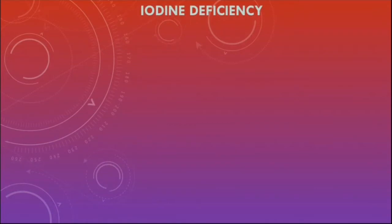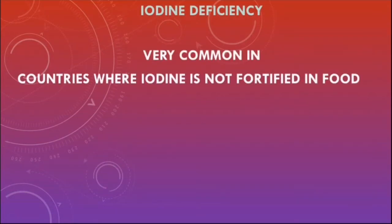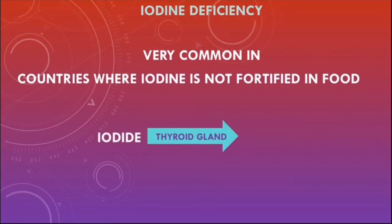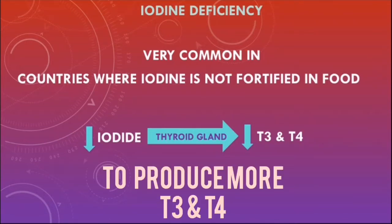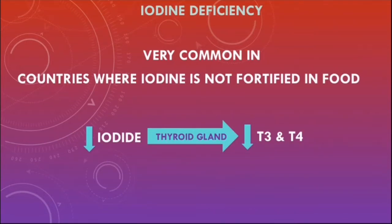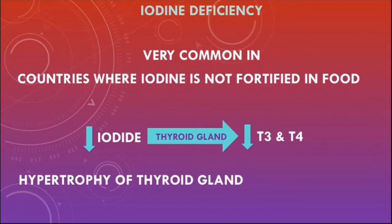Iodine deficiency is very common in countries where iodine is not fortified in food. Iodide is used by the thyroid gland to make T3 and T4. In iodine deficiency, there is less iodide available for the thyroid gland, leading to primary hypothyroidism. In response, the thyroid gland will hypertrophy and this can lead to an endemic goiter.